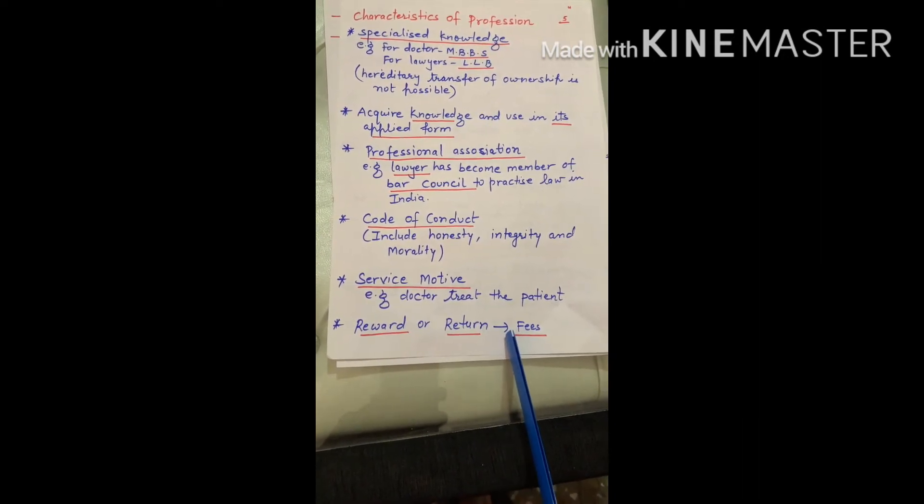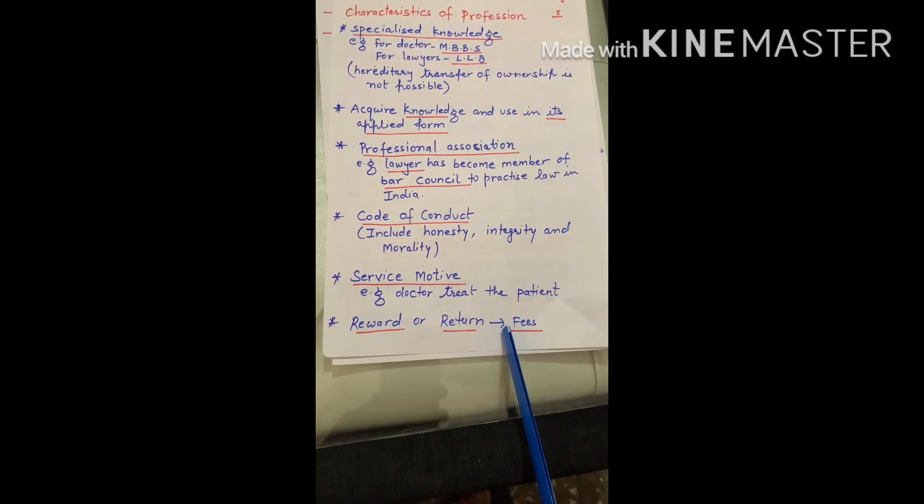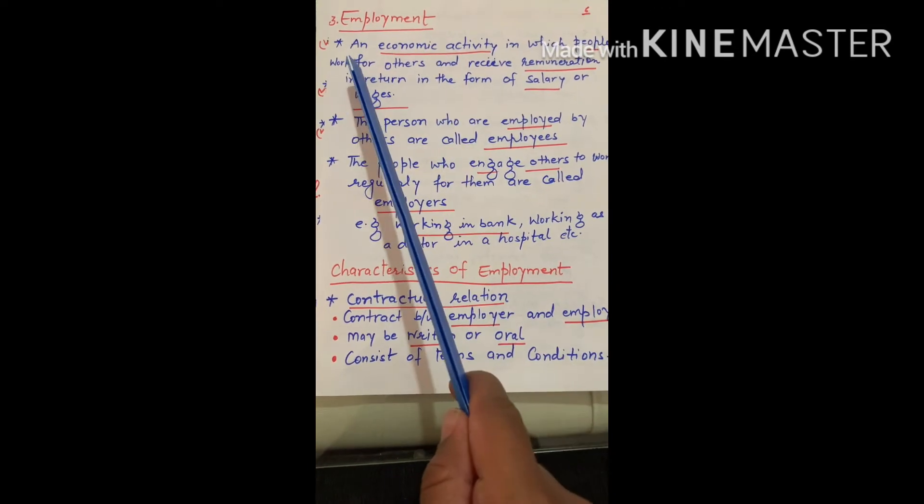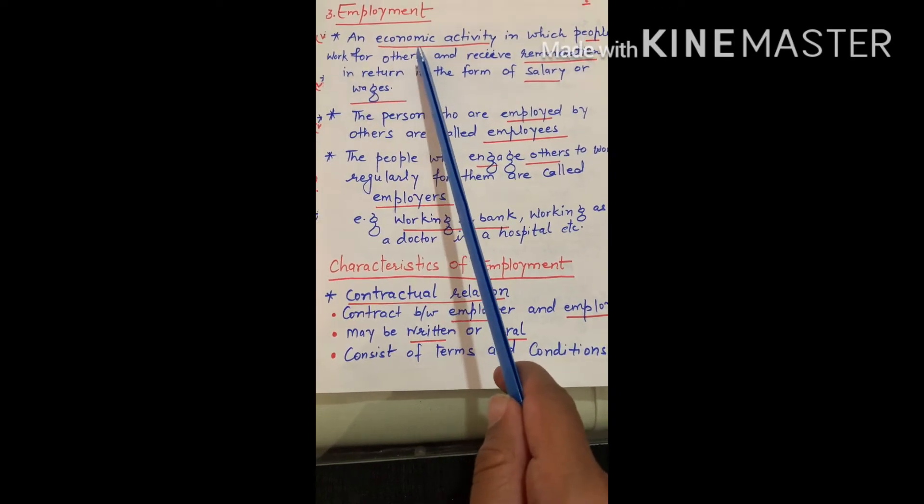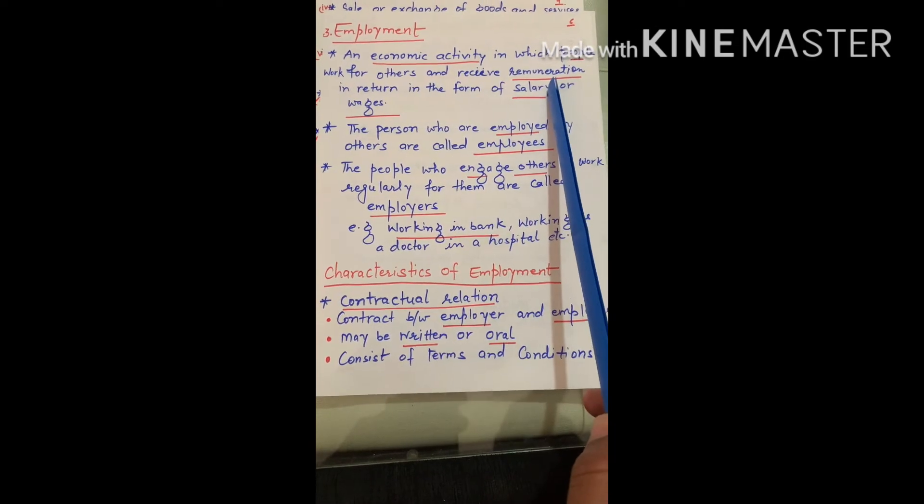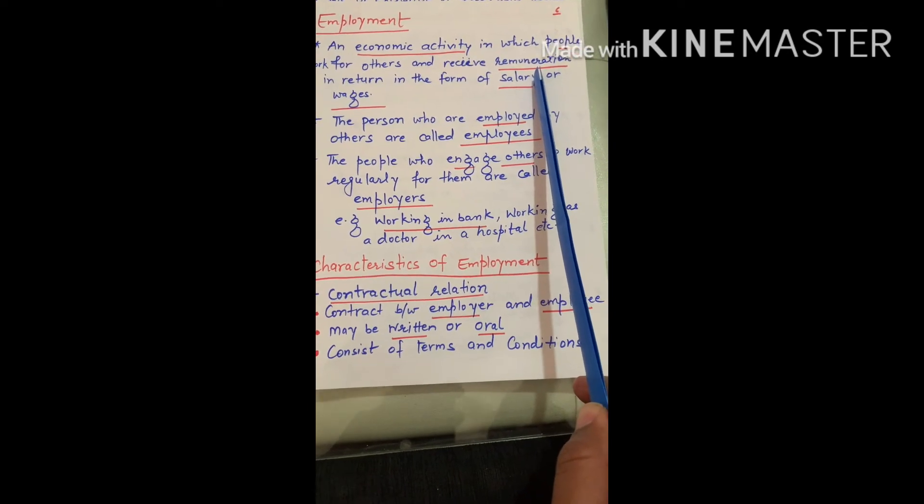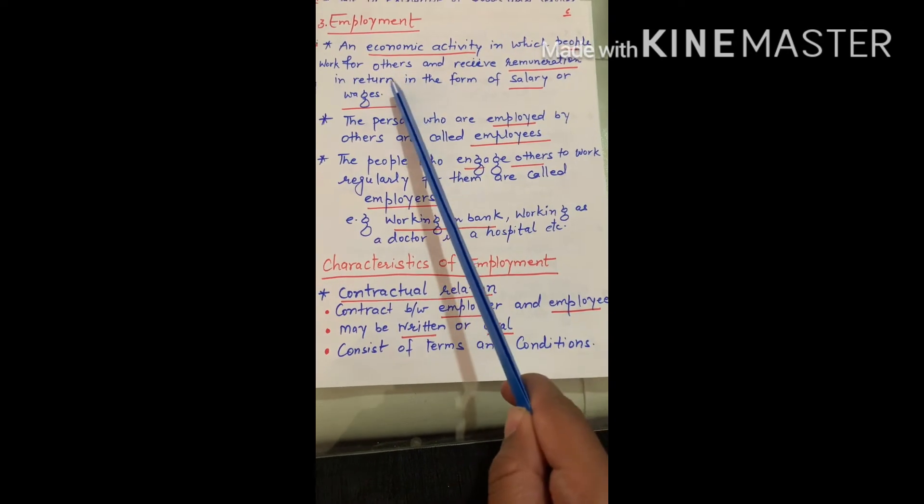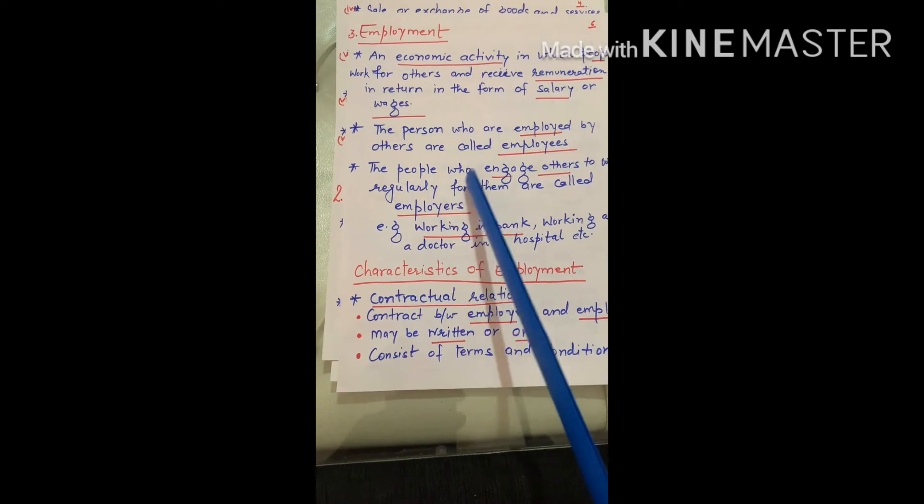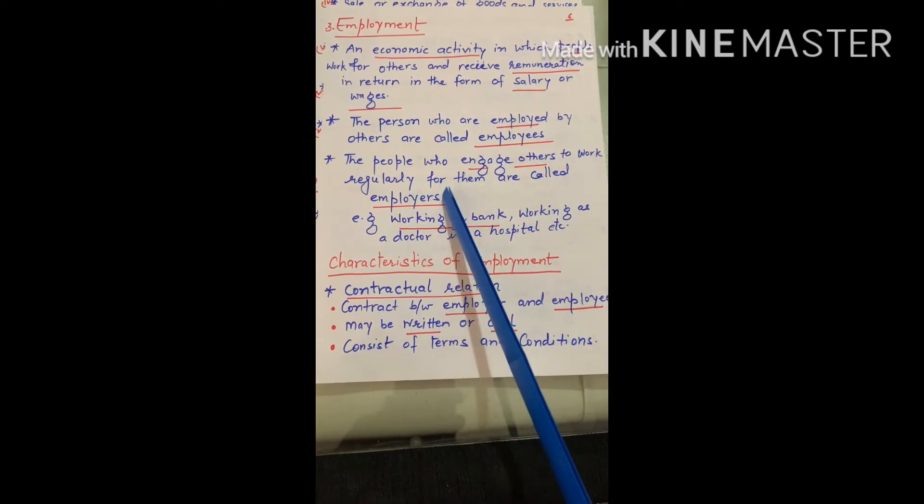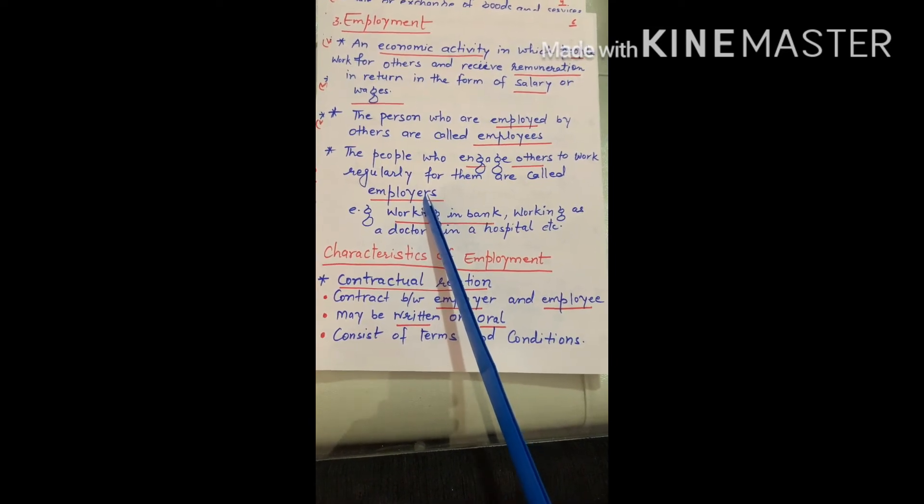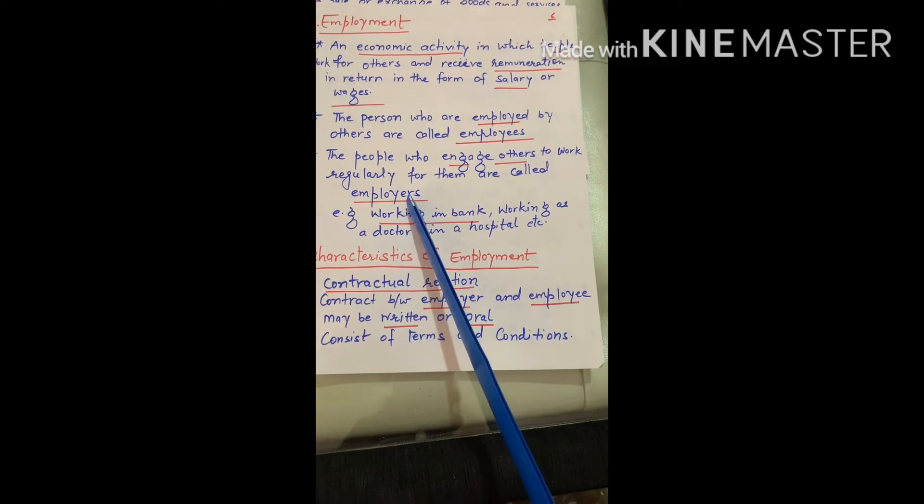It is a third economic activity of employment. It is also an economic activity where people work for others and receive remuneration. Suppose if your father is an employee, he is called employee. The people who engage others to work regularly for them are called employers and those who work under employers are employees.